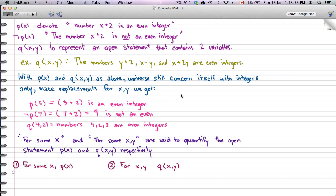For example, if we put in 5 for X, we get 5 plus 2 because we replace X by 5, and we get '7 is an even integer.' Well, that's not true.